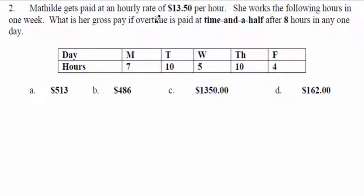Till gets paid an hourly rate — $13 for every one hour. That's what a rate means: comparing two things, dollars per hour. She works the following hours in one week. What is her gross pay if she gets time and a half after eight hours in any one day? If you worked an entire week for $162, that's probably not the answer — who would work a whole week for $162?